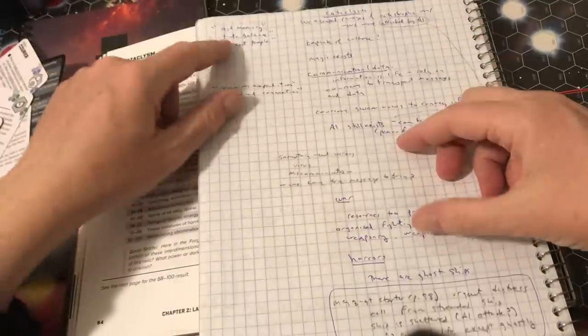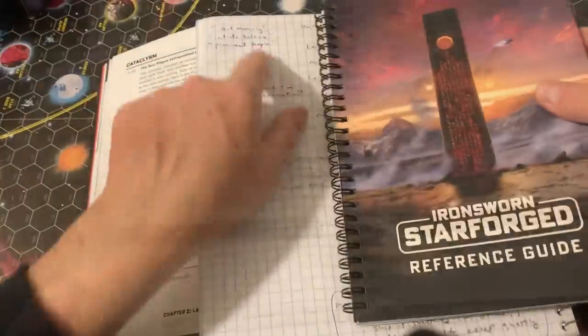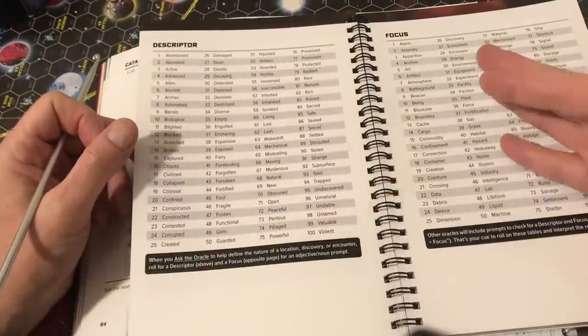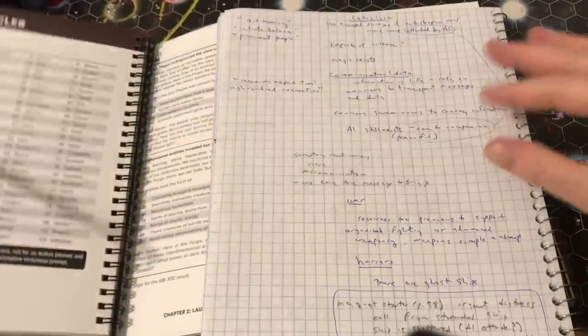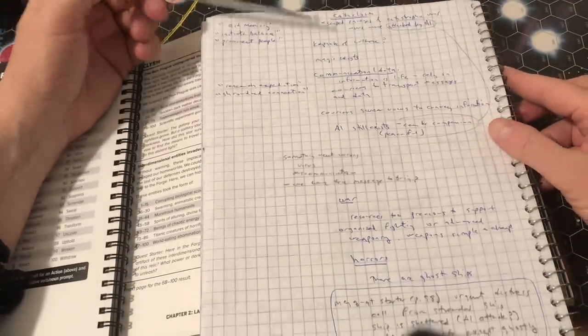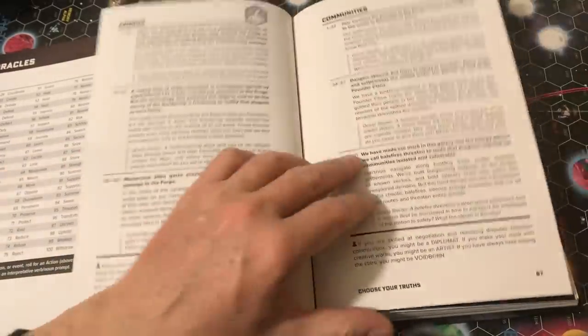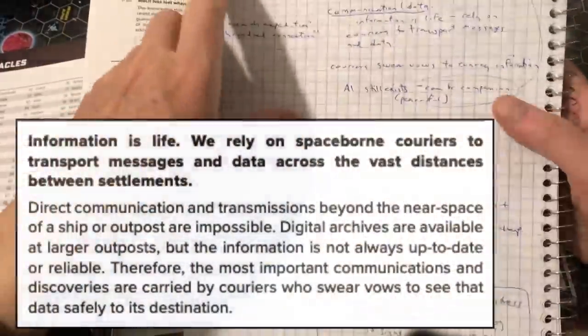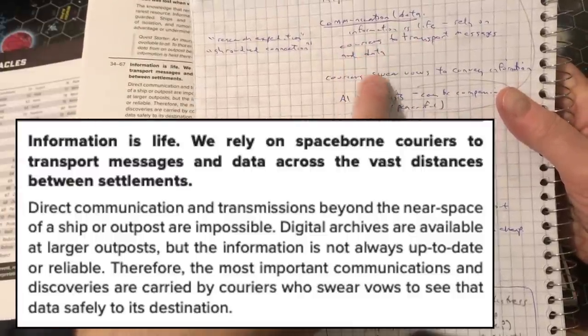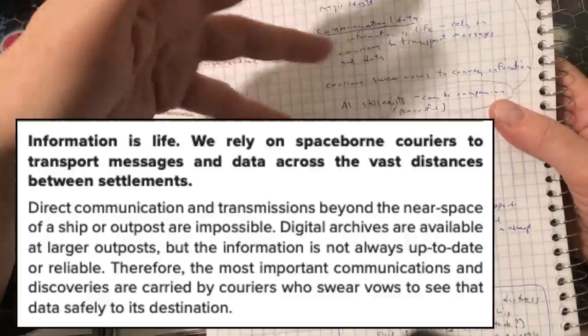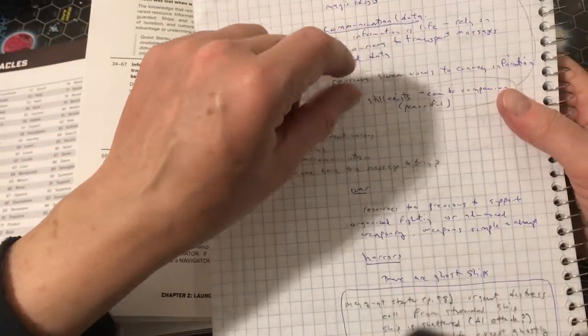Right after the cataclysm, I rolled aid, memory, initiate, balance, and prominent people just to start to have me think about what might be happening in this world. When I got to the section on communication and data, I rolled up that information is life. We rely on couriers to transport messages and data. And then I rolled on research expedition and shrouded connection. And the courier is going to swear a vow to convey information. So this was kind of giving me the sense that maybe I would be a courier.